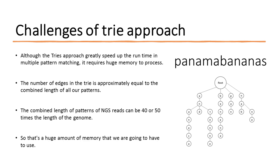Although the trie approach greatly speeds up runtime for multiple pattern matching, it requires a huge amount of memory. The number of edges in the trie is approximately equal to the combined length of all the patterns. This is not ideal because the combined length of next-generation sequencing reads can be 40 or 50 times the length of the genome, representing a huge amount of memory.